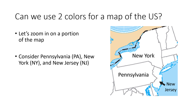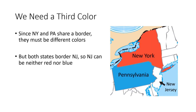Let's zoom in on a portion of the map. We've got Pennsylvania, New York, and New Jersey here. New York and Pennsylvania share a border, so those two states have to be different colors — I've shaded New York in red and Pennsylvania in blue. Now both of those states border New Jersey, so New Jersey can't be blue because it borders Pennsylvania, and it can't be red because it borders New York. So we'd need some third color for New Jersey.